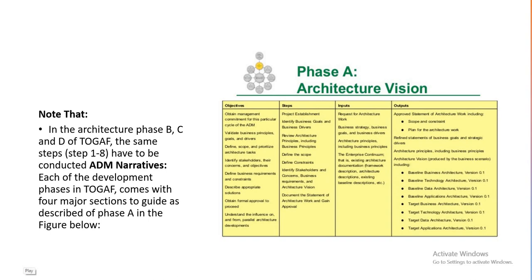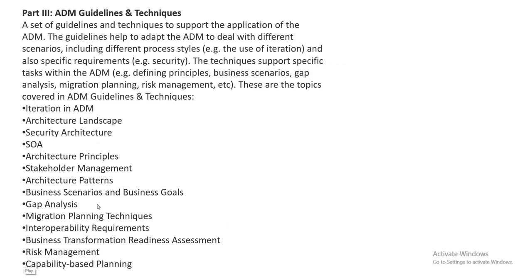You can see the diagram here. The third part is ADM guidelines and techniques — what techniques are to be followed. The guidelines and techniques are set up for ADM, which include iteration of the ADM, architecture landscape, security architecture, SOVA, architecture principles, business scenarios, gap analysis, migration planning, business transformation readiness, and risk management.